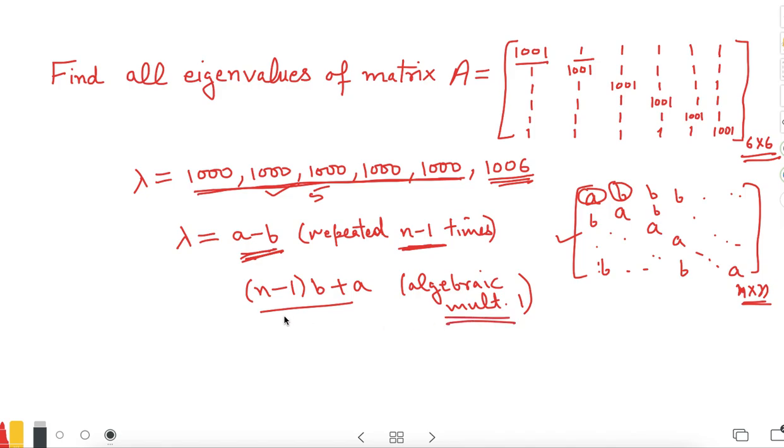In this case, if you are working with 6 by 6, B is 1, so you clearly get 5 times 1 which is 5 plus A which is 1001, so you get the value 1006.